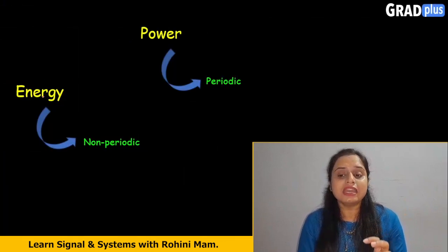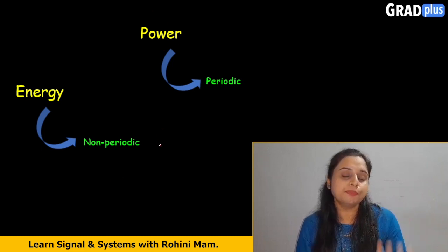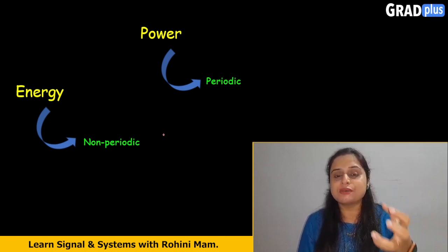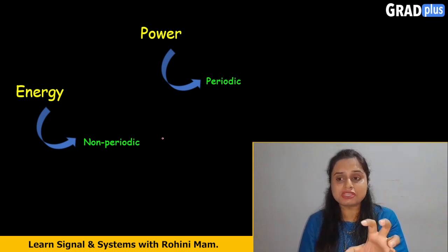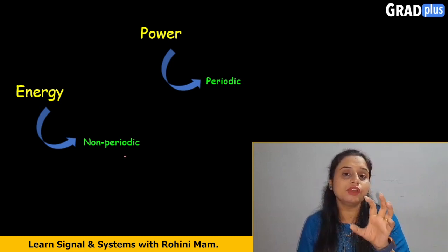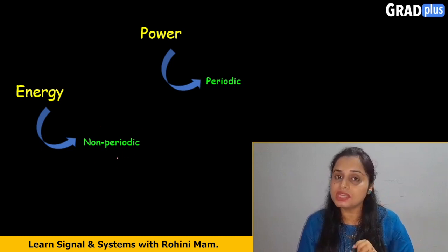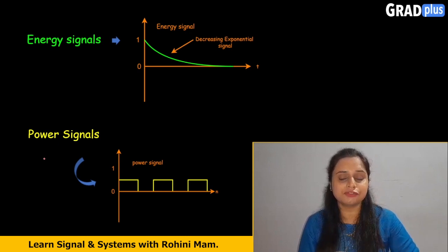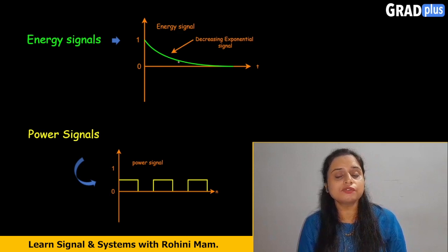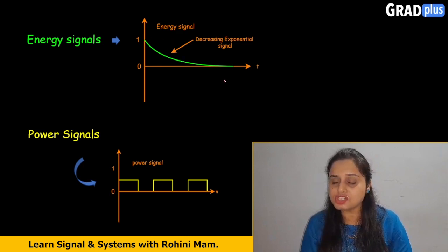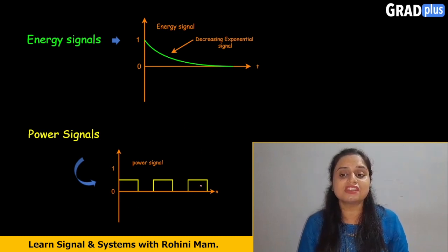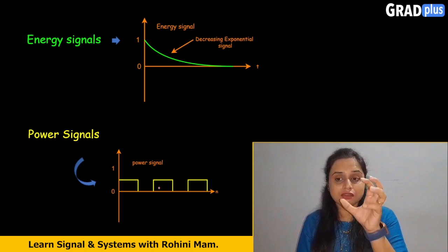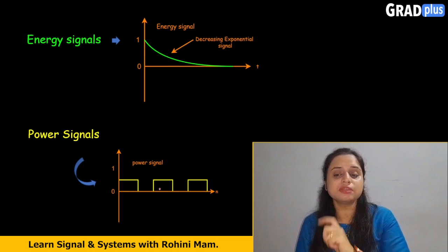The next difference: the energy signal is a non-periodic signal and the power signal is a periodic signal. A periodic signal is any signal which has some pattern and repeats continuously after a particular interval of time. Every power signal is a periodic signal, and if a signal does not follow this condition it is non-periodic, as energy signals are. Graphically, the energy signal is represented by a decreasing exponential, while the power signal follows a repeating pattern at continuous intervals of time.